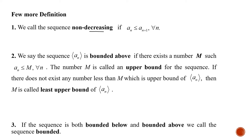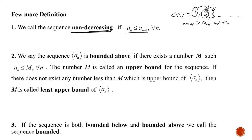Now let's look at a few more definitions. We call a sequence non-decreasing if a_n ≤ a_(n+1) for every n. For example, a constant sequence is neither increasing nor decreasing, but it is non-decreasing since it satisfies the equality. This is why we use the term 'non-decreasing' — to include constant sequences as well.